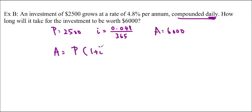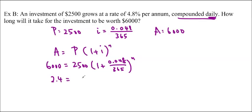So we're going to plug that into the formula. A equals P times 1 plus I to the N. So A equals P times 1 plus I to the N, and we'll just fill it in. 6,000 is equal to 2,500 times 1 plus 0.048 over 365 to the N. Again, we're not isolated, so we'll move that over. It actually ends up being 2.4. So 1 plus 0.048 over 365 to the N.